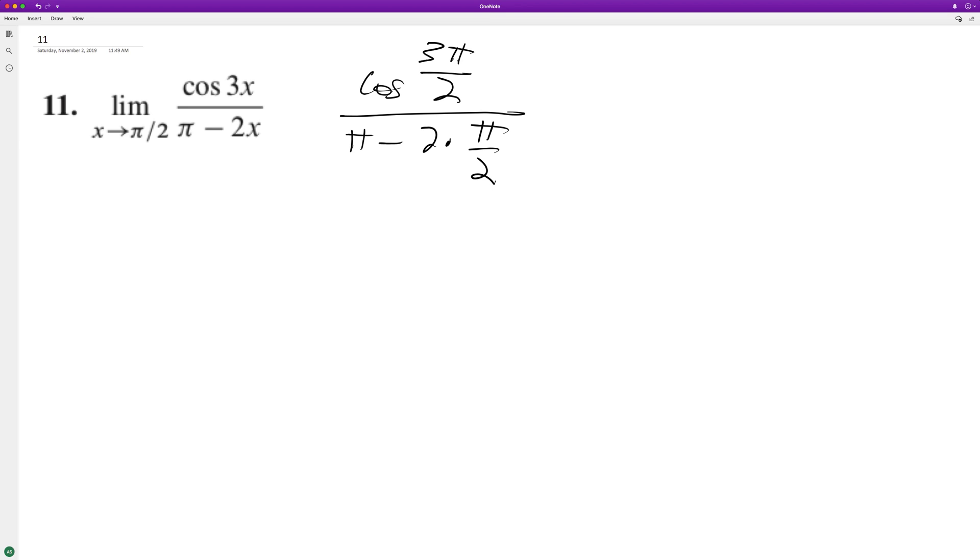So three pi over two on the unit circle is down here. The cosine of that is zero, and then pi minus, so these cancel out, so this is pi minus pi, so it's zero. So that's an indeterminate.